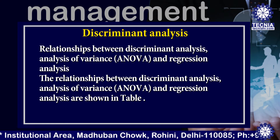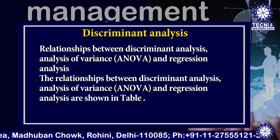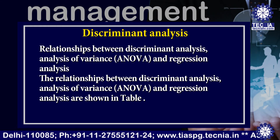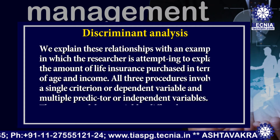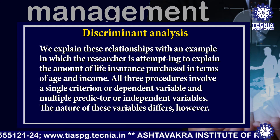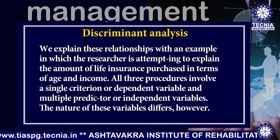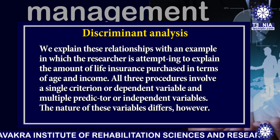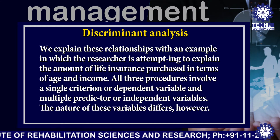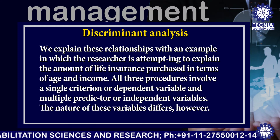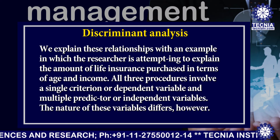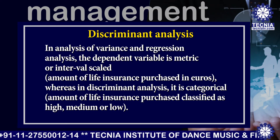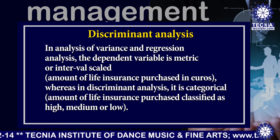Now I am explaining the relationship between discriminant analysis, ANOVA, and regression analysis, as shown in a table. We explain these relationships with an example in which the researcher is attempting to explain the amount of life insurance purchased in terms of age and income. All three procedures involve a single criteria or dependent variable and multiple predictor or independent variables. In analysis of variance and regression analysis, the dependent variable is metric or interval scale — here, the amount of life insurance purchased in rupees.